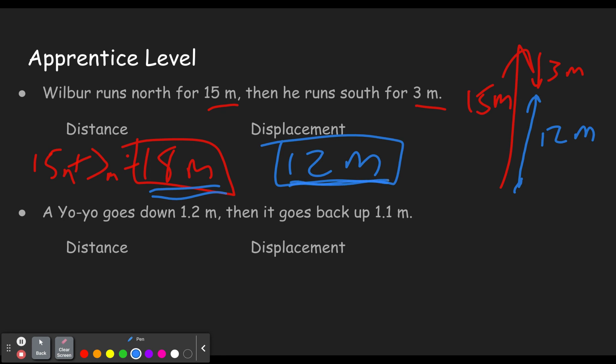A yo-yo goes down 1.2 meters. Feel free to pause it and see if you can do this ahead of me. Goes down 1.2 meters, then goes back up 1.1 meters. What's the distance? How far did it go total? We add those up. 1.2 plus 1.1 equals 2.3 meters.